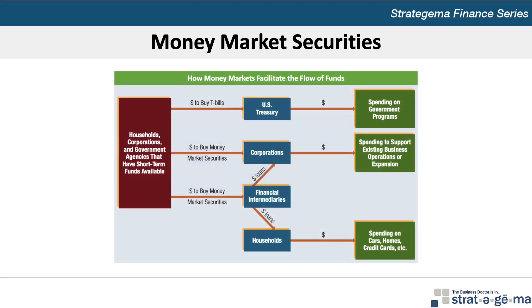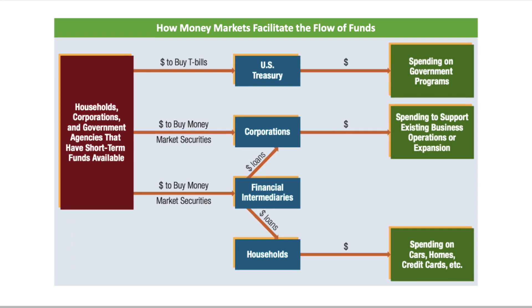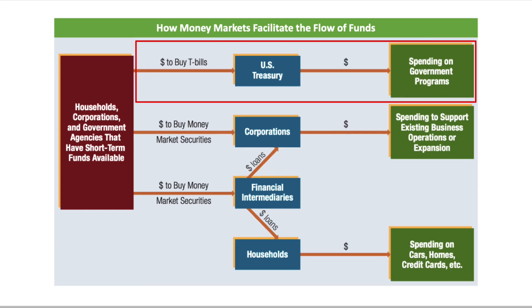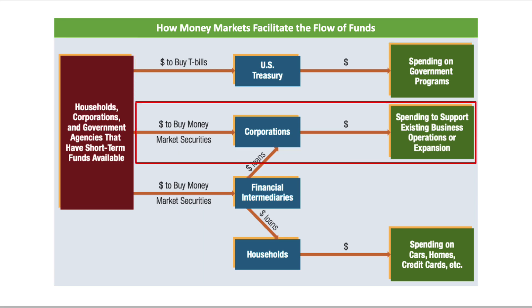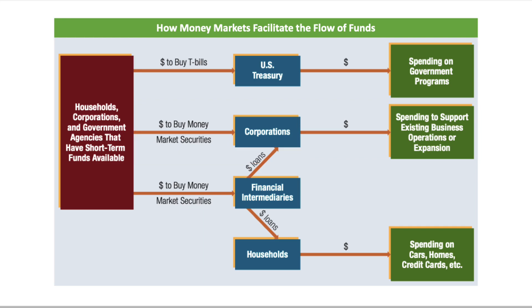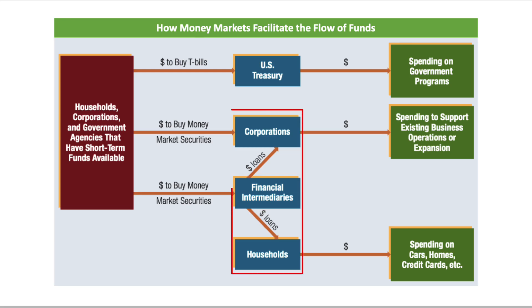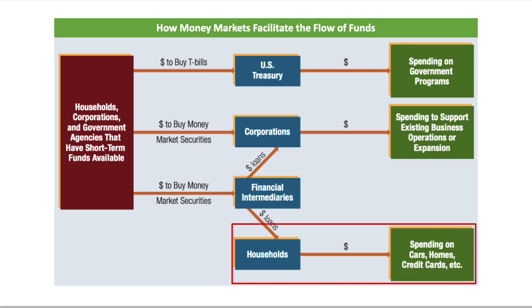The means by which money markets facilitate the flow of funds are illustrated in this exhibit, where we can see that the government uses funds from the sale of treasury bills to fund government spending programs, corporations sell money market securities to fund existing business operations or expansion, and financial intermediaries use money raised from issuing money market securities to loan funds to corporations and to households who spend money on cars, homes, credit cards, etc.